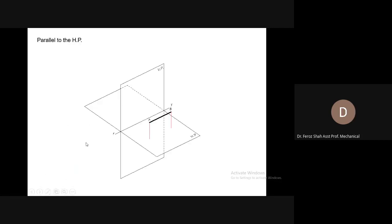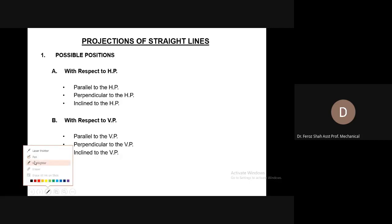Possible positions of a line with respect to the two principal planes of projection — that is, with respect to the horizontal plane, the line can have these positions: parallel to the horizontal plane, perpendicular to the horizontal plane, or inclined to the horizontal plane.